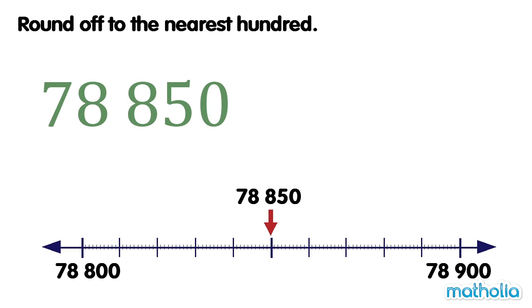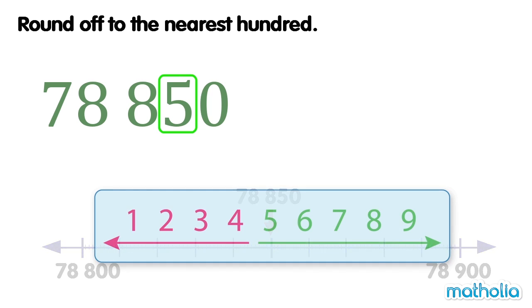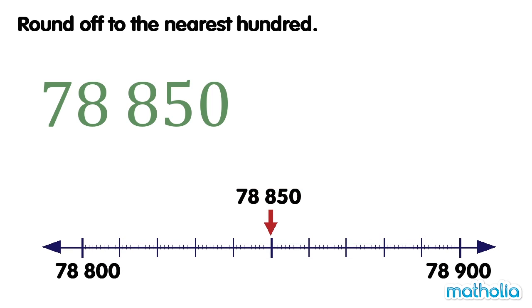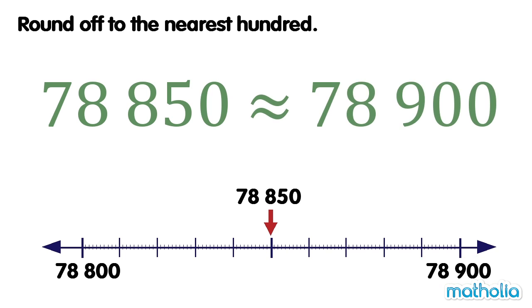Let's round off 78850 to the nearest hundred. The digit in the tens place is 5. Digits that are 5 or more are rounded up. So 78850 is rounded up to 78900. To the nearest hundred, 78850 is approximately equal to 78900.